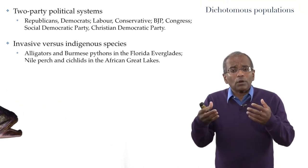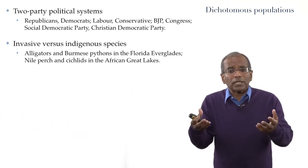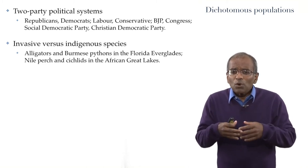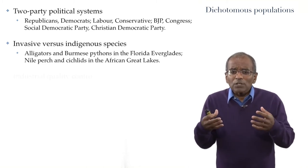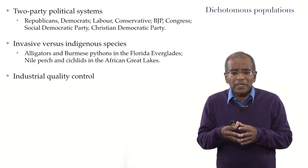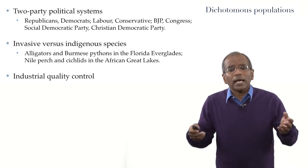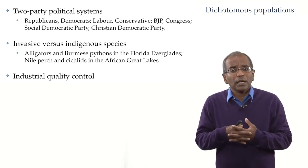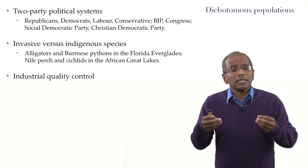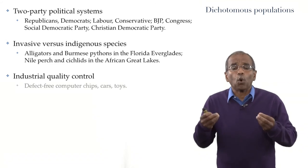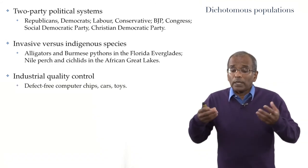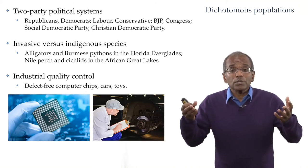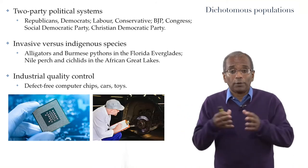What is the proportion of the Nile perch to the cichlids today? We know it is an issue, but how does one figure out how big an issue it is? Still another example of a dichotomous population arises in industrial quality control — whether it is of computer chips, cars, wrenches, or what have you.